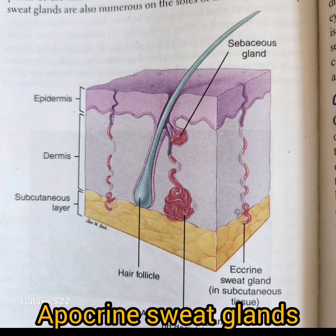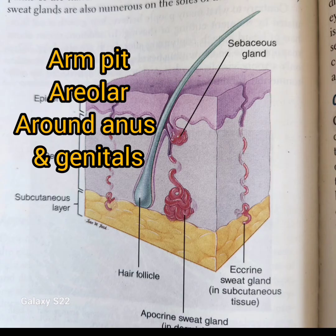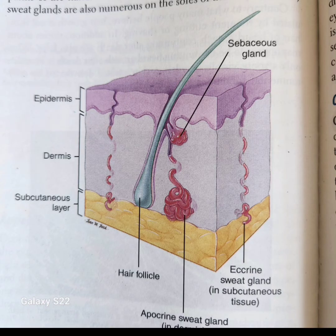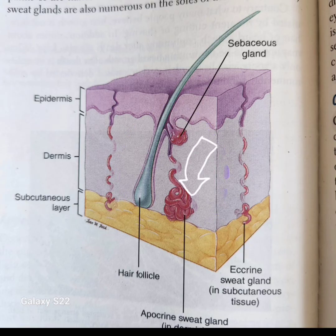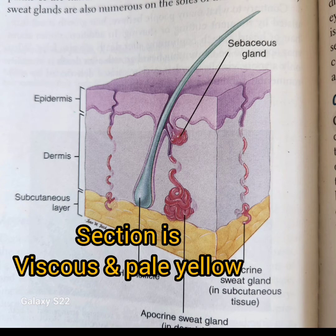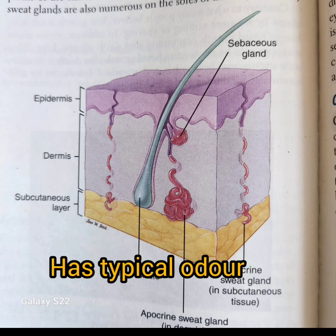Apocrine sweat glands are located deep in the subcutaneous layer of skin. They are present in the skin of the armpit, areola of the breast, and pigmented skin areas around the anus and genitalia. They are connected with hair follicles and are classified as simple branched tubular glands. They enlarge and begin to function during puberty. They produce a more viscous and colored secretion than eccrine glands, and when contaminated and decomposed by skin bacteria, this secretion produces a typical odour.